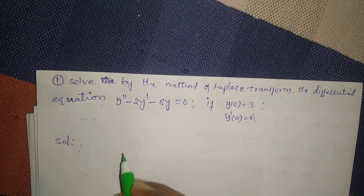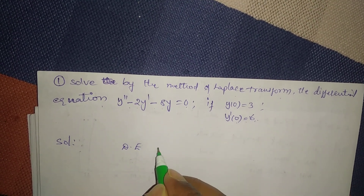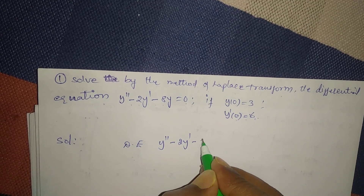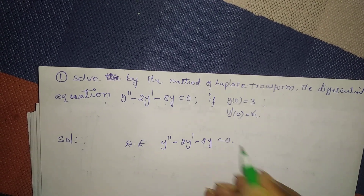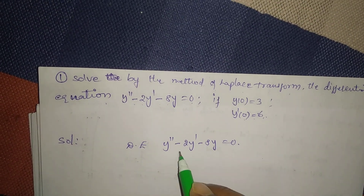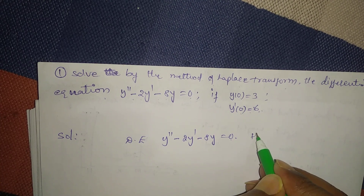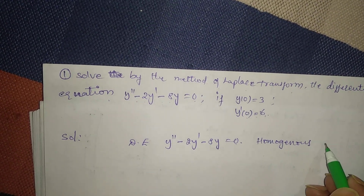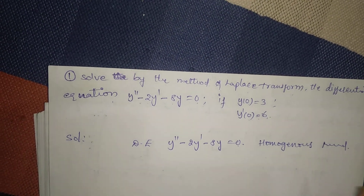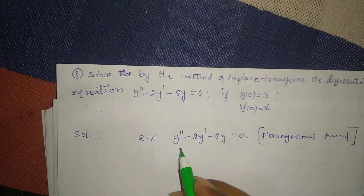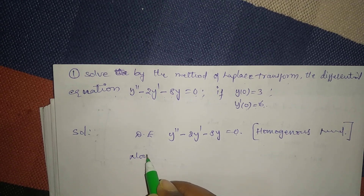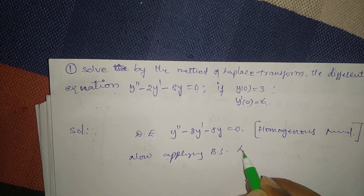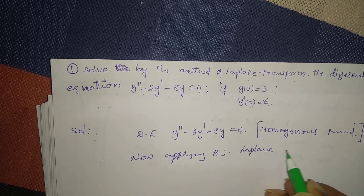First, write down the differential equation: y'' - 2y' - 8y = 0. This equation is equal to 0, so this is a homogeneous function. Now, applying the Laplace transform to both sides.